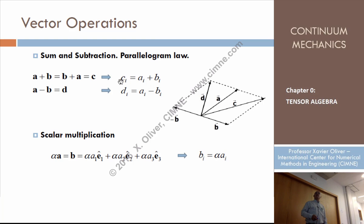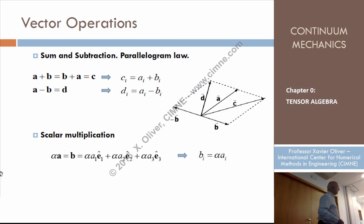So the first component of C, being the sum of A plus B, which is the same as B plus A, is just summing component i of A and component i of B. For subtracting, the same: the component of the resulting vector from subtracting B from A is just component i of A minus component i of B. To subtract two vectors, just subtract the corresponding components; to sum two vectors, just sum the corresponding components.